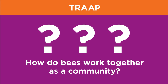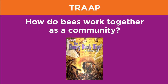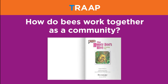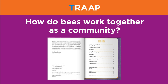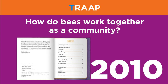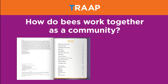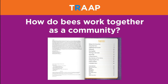Let's use a question from an earlier OSLIS video: how do bees work together as a community? Let's look at a potential source: The Honeybee's Hive: A Thriving City. The first test in TRAP is Timeliness. In a book, the copyright date is usually on the verso, or back of the title page. This book was copyrighted in 2010. As of the making of this video, 2010 is new enough for our topic because scientists have known for some time how honeybees live in a hive. However, if we were focused on a more time-sensitive topic like colony collapse disorder, we would want newer information.